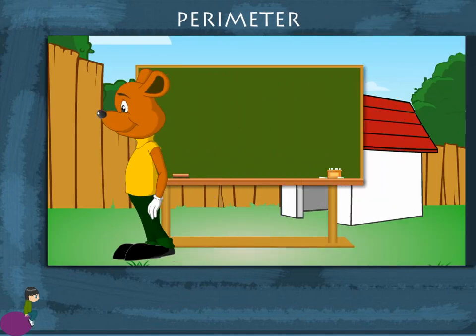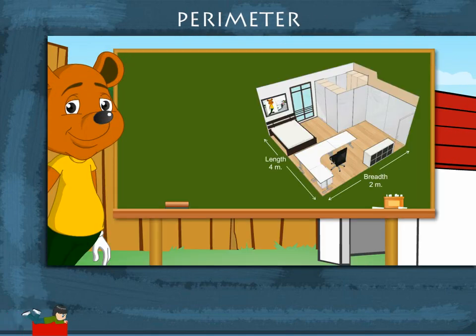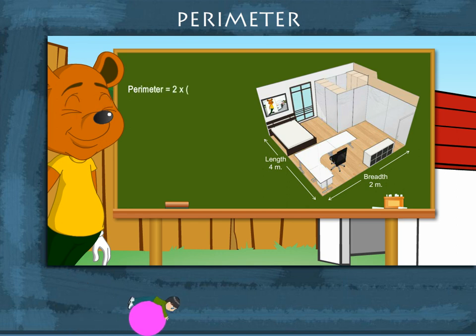Perimeter. Toby's study room is 4 meter by 2 meter. He wants to find its perimeter. He knows that perimeter is equal to 2 into length plus breadth.